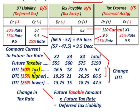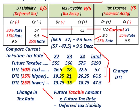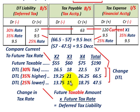Now let's look at the cases where the tax rate changes. If the enacted tax rate increases from 30% to 35%, we take 35% times those future taxable amounts and get a total deferred tax liability of $66,500. And if the tax rate decreases from 30% down to 25%, applying 25% to the future taxable amounts gives a total deferred tax liability of $47,500.